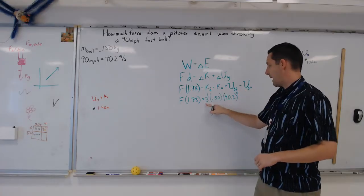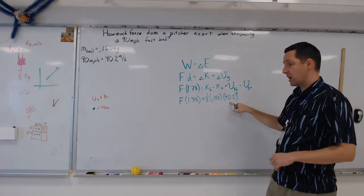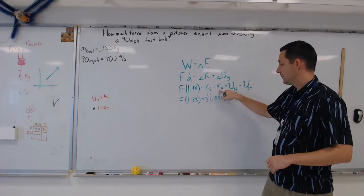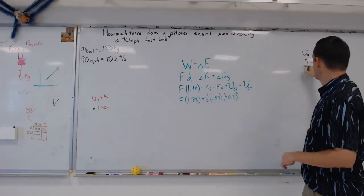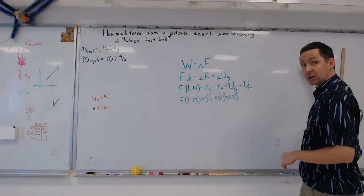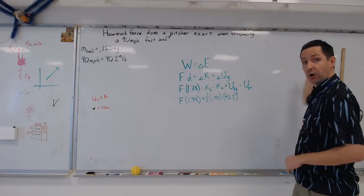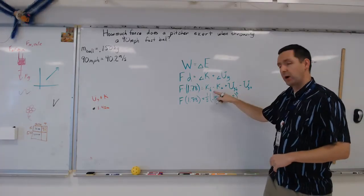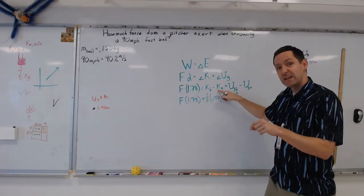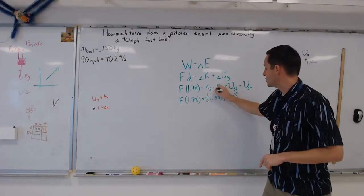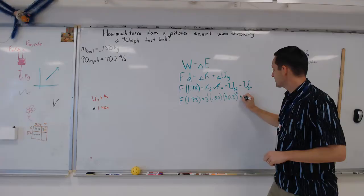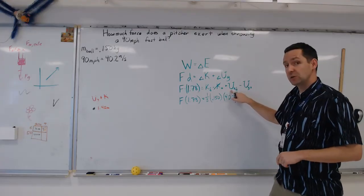So that's one-half mv squared final minus the kinetic energy initial. Remember, initially, I said that there was no kinetic energy because there was no speed before I started throwing it. So that would be one-half mv squared. That v is going to be zero. So no kinetic energy. We'll just take that guy out.